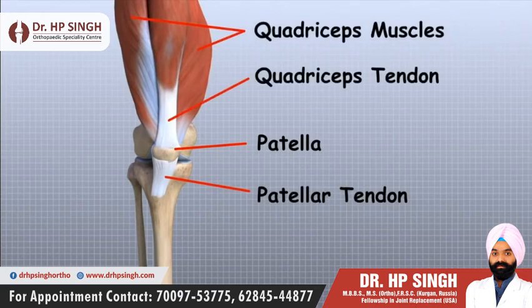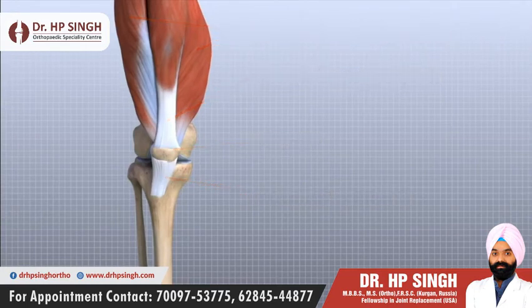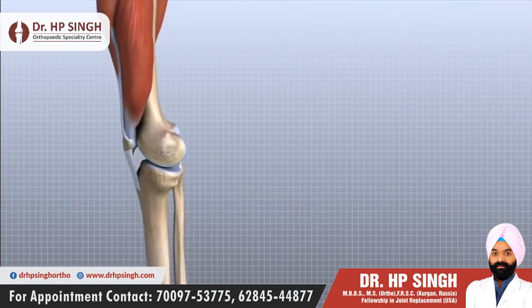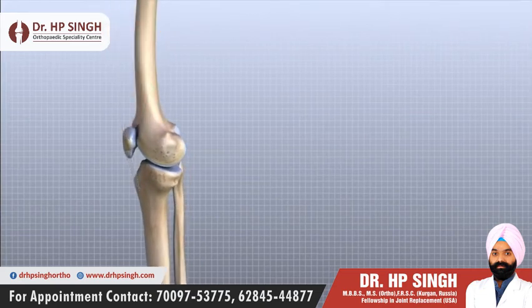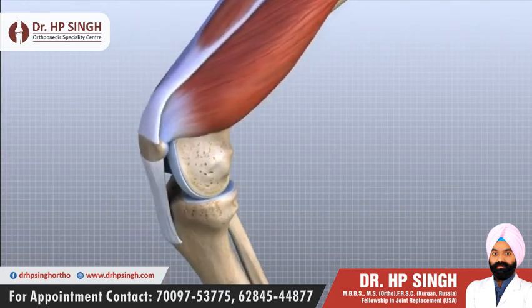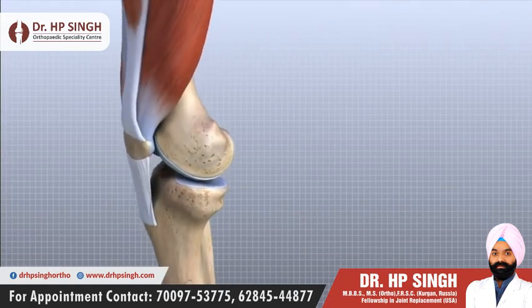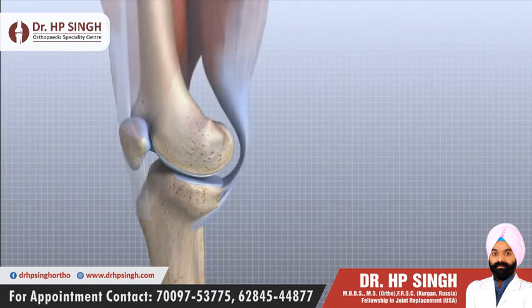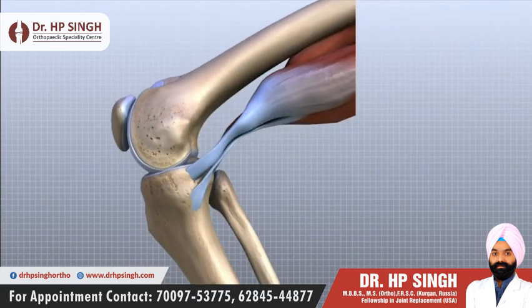The extensor mechanism is the motor that drives the knee joint and allows us to walk. It sits in front of the knee joint and is made up of the patella, the patellar tendon, the quadriceps tendon, and the quadriceps muscles. The four quadriceps muscles in front of the thigh attach to the quadriceps tendon. When these muscles contract, they straighten the knee joint, such as when you get up from a squatting position. The patella works like a fulcrum, increasing the force exerted by the quadriceps muscles as the knee straightens. The hamstring muscles in the back of the thigh bend the knee when they contract.